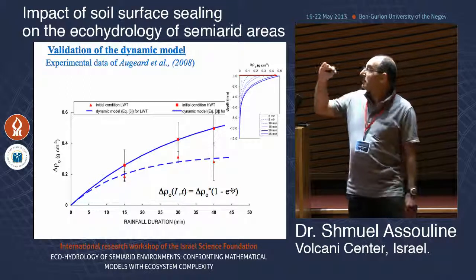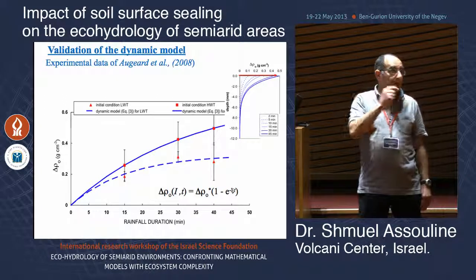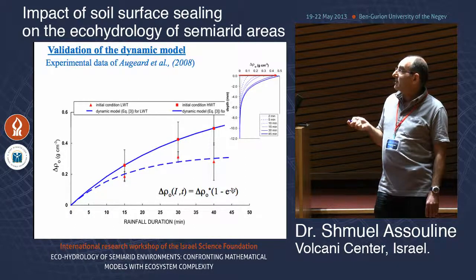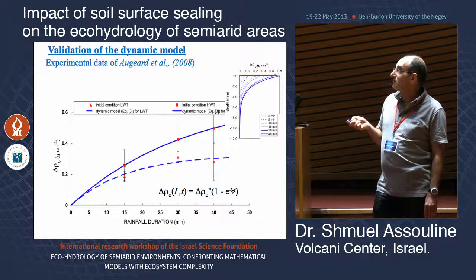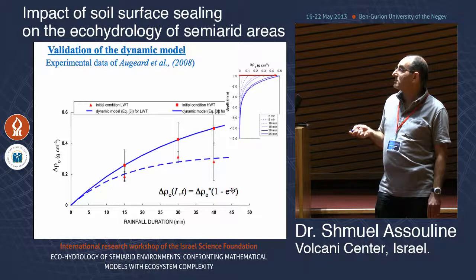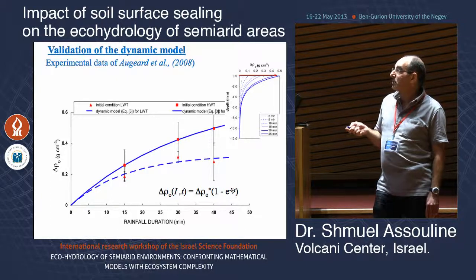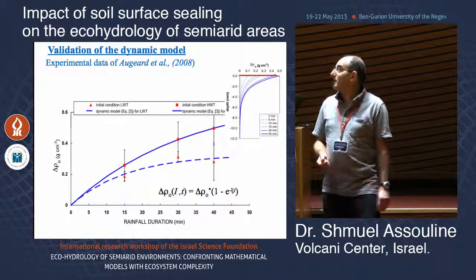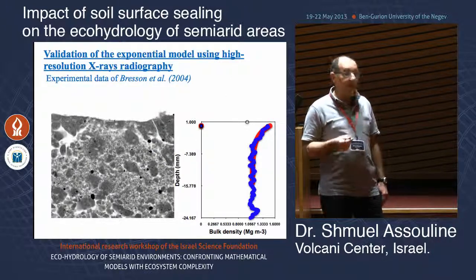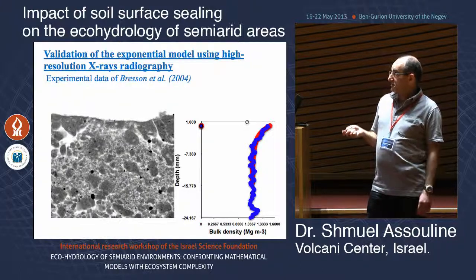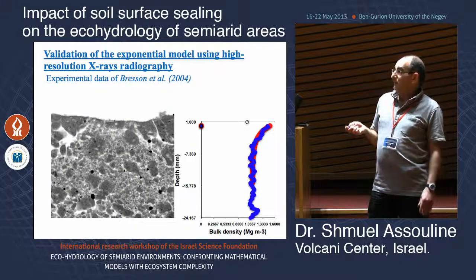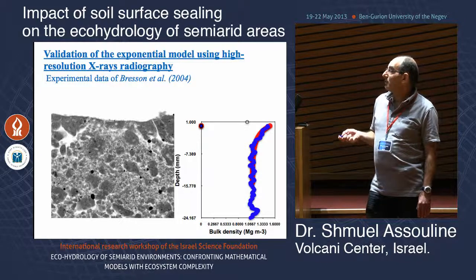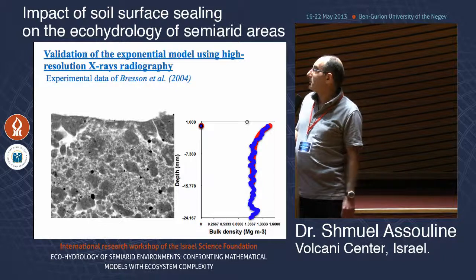This was validated experimentally by Roth in 1997, who took thin slices of soil exposed to rainfall until infiltration rate stabilized. For two soil types, an exponential decay of bulk density from the surface maximum down to the undisturbed soil value was observed over approximately 10 millimeters. Bresson et al. in 2004 confirmed the same result using x-ray radiography on a vertical thin slice of soil crust, showing the exponential decay down to the upper 15 millimeters where it merges with undisturbed soil.